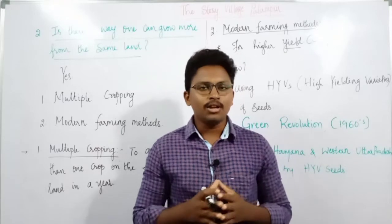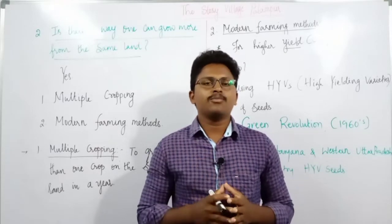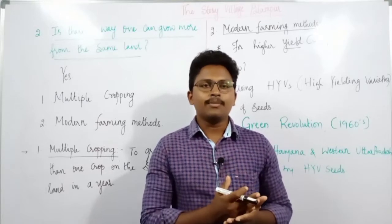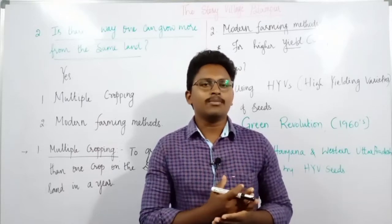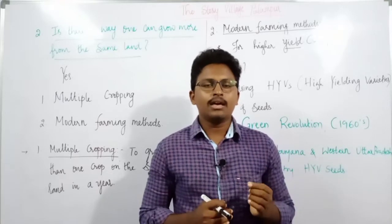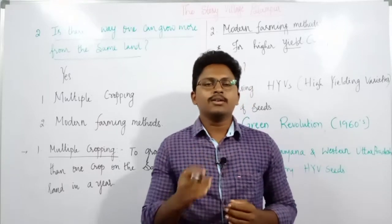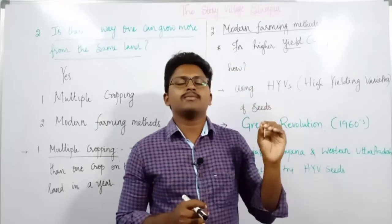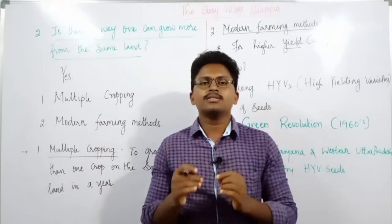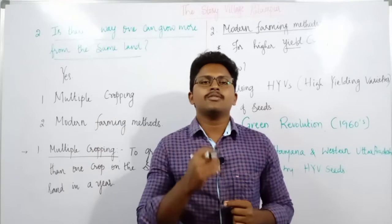In the previous lectures we have also discussed the factors of production such as land, labor, physical capital, and human capital. Under physical capital we discussed working capital as well as fixed capital. We also discussed that land is fixed in this village — there is a fixed amount of land with no chance of increasing its size.